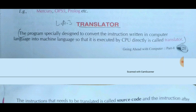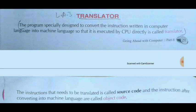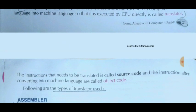Translator plays a very important role. The formal definition: a translator is a program especially designed to convert instructions written in computer language — which includes high level language and assembly language — into machine language, so that it can be executed by the CPU directly. The CPU can execute only machine language, which is written in low level form.